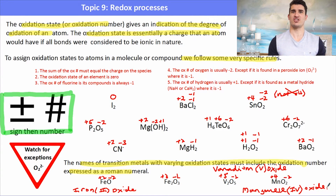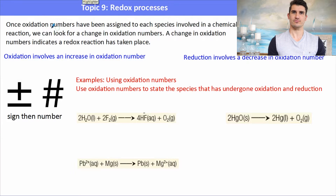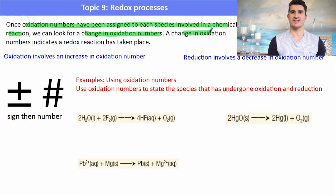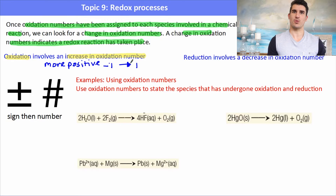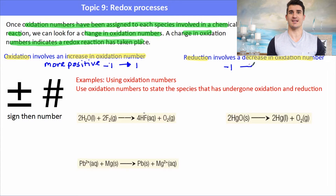Transition metals can form multiple oxidation states, which is why Roman numerals are needed. We use oxidation numbers to detect when a redox reaction has taken place: a change in oxidation number means redox has occurred. Oxidation involves an increase in oxidation number (numbers become more positive), while reduction involves a decrease in oxidation number (numbers become less positive or more negative). For example, going from −1 to +1 is oxidation; going from −1 to −3 is reduction.